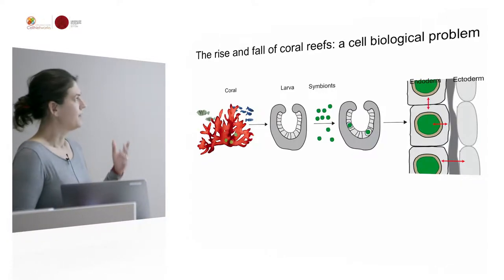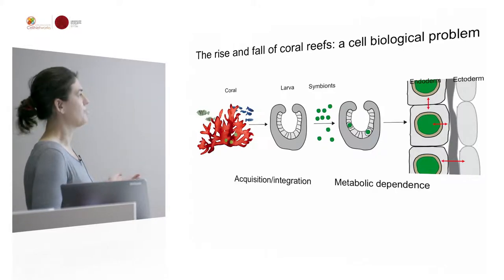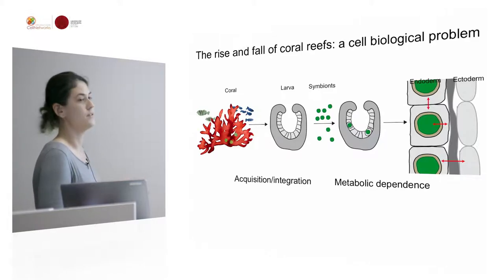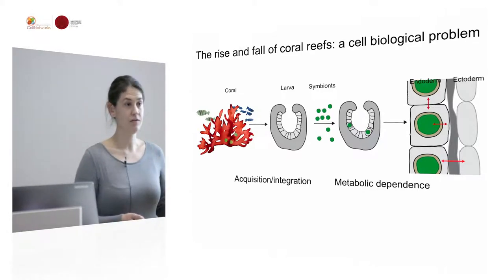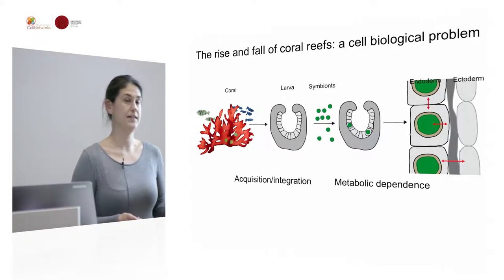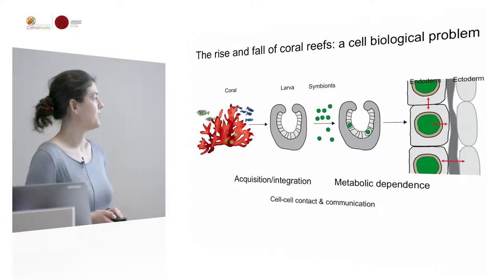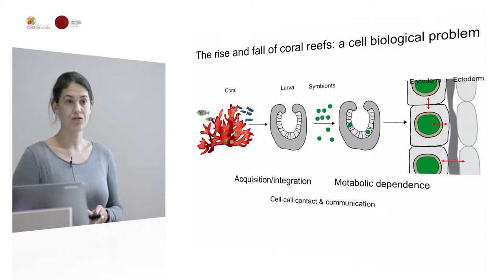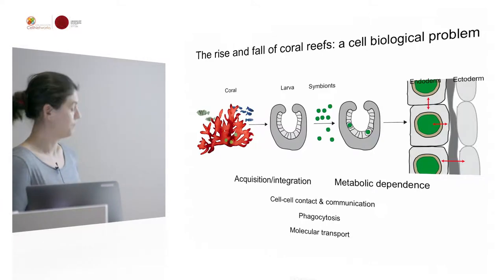These fundamental aspects of symbiosis establishment — such as the acquisition and integration of symbionts and the metabolic dependence — actually depend on very classical cell biological phenomena, such as cell-cell contact and communication, phagocytosis, and molecular transport.